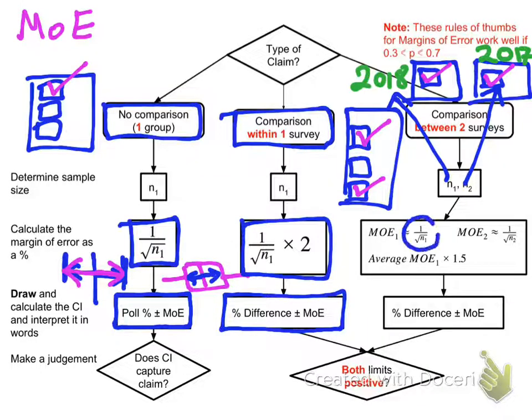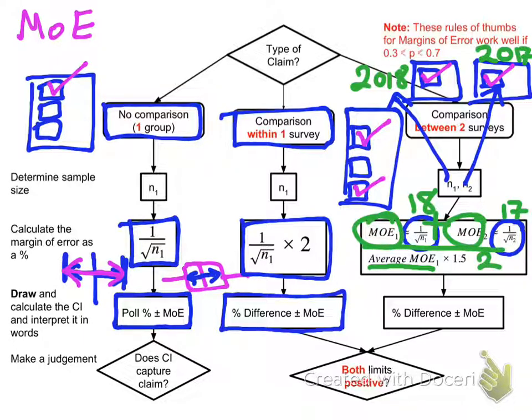So what I need to do is I've got my 1 over root n formula, and I find that for each of the surveys, that's one for 2018, one for the 2017. And then I need to find the average margin of error. Now remember what an average is? That's when I add this margin of error and that margin of error, I add those two together and divide by two. That gives me my average. So I'm going to take that average, and I'm going to multiply it by one and a half, and that gives me the margin of error that I'm going to use in my confidence interval formula.